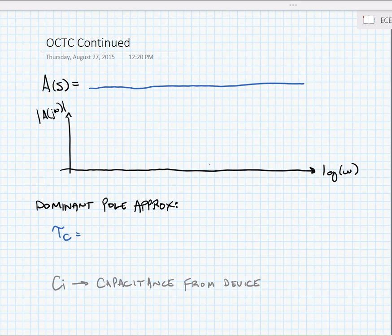Here we have a generalized transfer function for an amplifier. We have the zeros in the numerator: 1 plus a1 times s plus a2 times s squared, all the way out to an times s to the n. And in the denominator we have poles given by 1 plus b1 times s plus b2 times s squared, all the way out to bn+1 times s to the n+1.